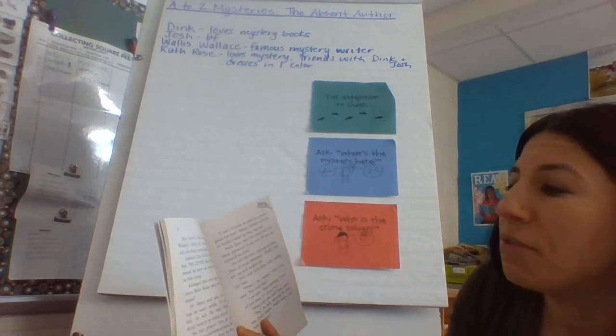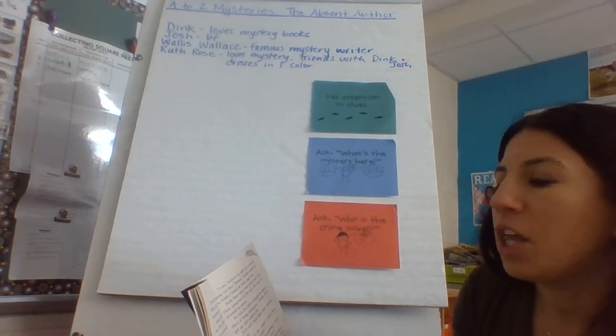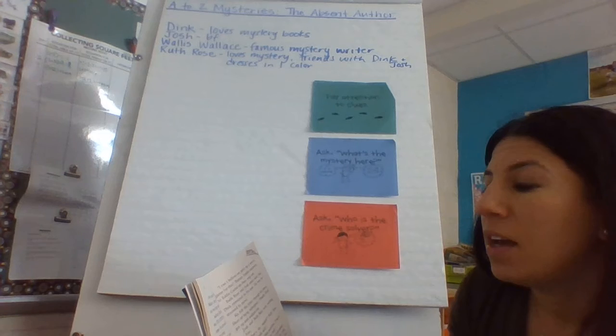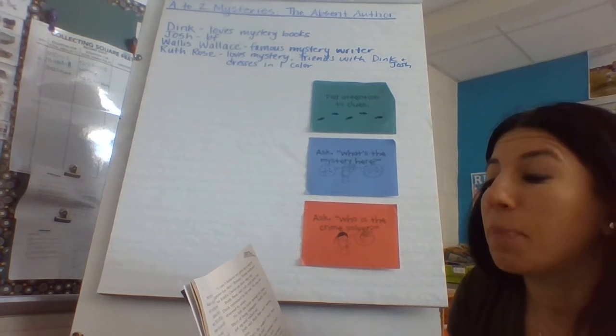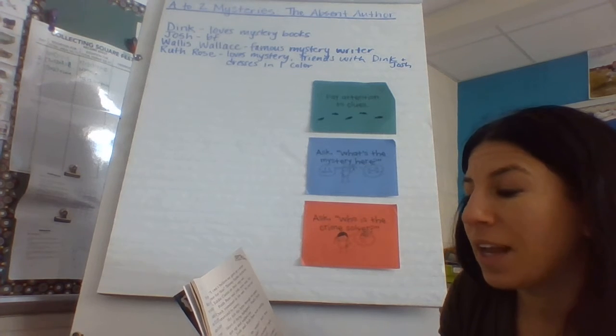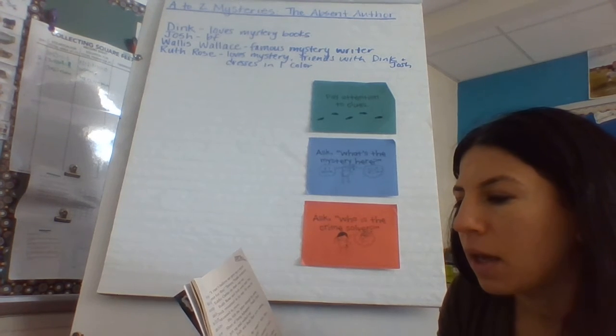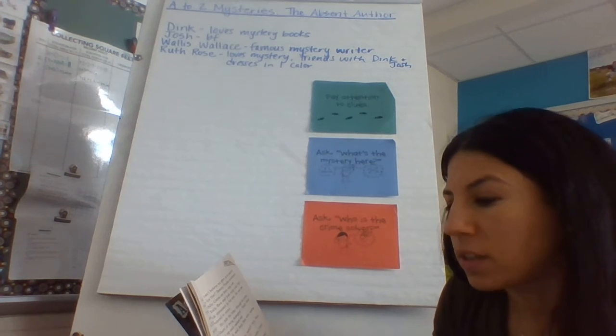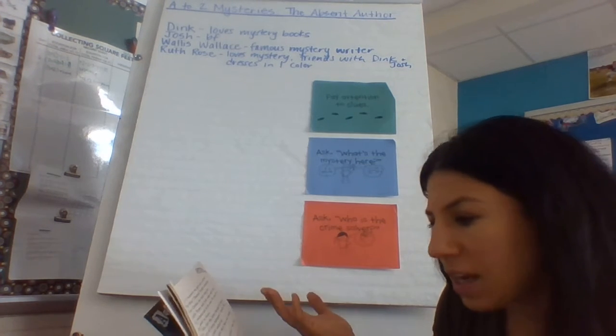Ever since he had received Wallace Wallace's letter, he thought about only one thing, meeting him today. Suddenly, Dink felt his heart skip a beat. The letter. Short of being kidnapped, the letter said, nothing will stop me from coming. Kidnapped? Dink shook himself. Of course, Wallace Wallace had been kidnapped.